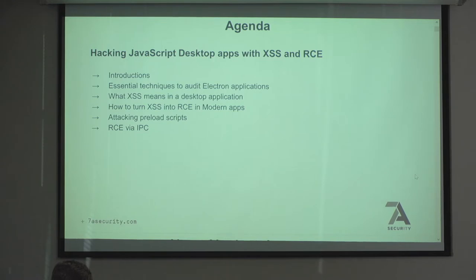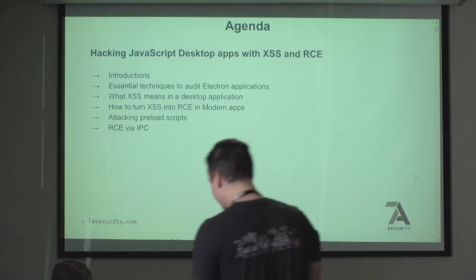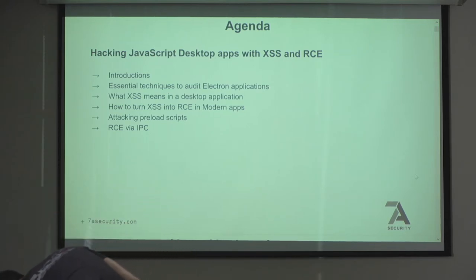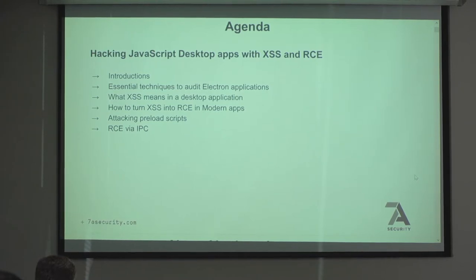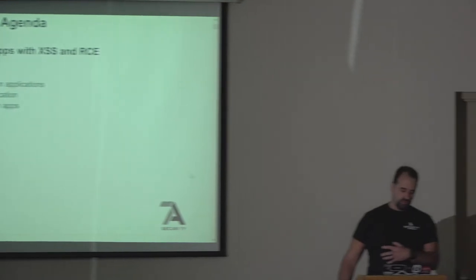First I'll give an introduction, then some essential techniques for auditing Electron applications - how to get started and get findings without any prior experience. Then we'll see what XSS means when you get it in a desktop application as opposed to a web application - what you can do and the interesting scenarios. We'll see how to exploit and mitigate them, how to turn XSS into remote code execution, and attacking preload scripts, which is a kind of prototype pollution in the context of a desktop application.